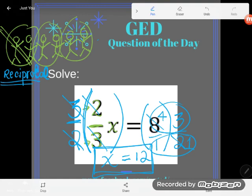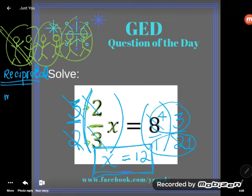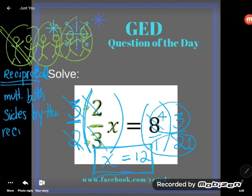So once again, I'll say in order to get rid of a fraction multiplier, you can just multiply both sides by the reciprocal. Great. If you have any questions about this or any other GED math topic, be sure to drop it in the comments, and I'll do my best to answer it.